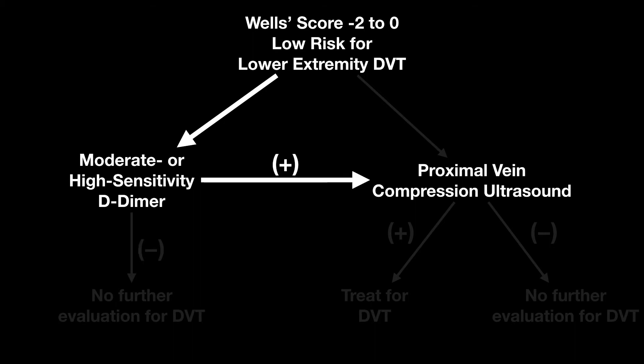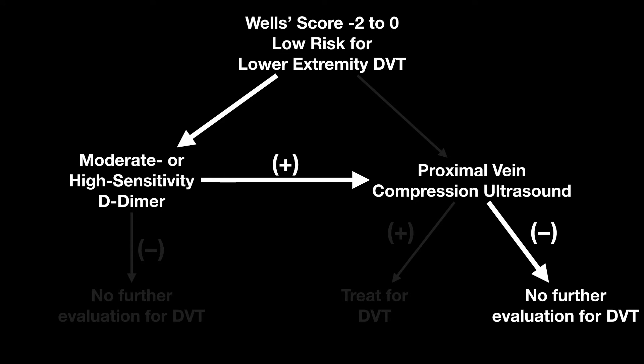So what if it is positive? If it's positive, then we're going to move to a proximal vein compression ultrasound. When we move to that proximal vein compression ultrasound, if it's positive, we're going to treat that DVT — in the venous system proximal to or at the popliteal — with whatever anticoagulation is appropriate. If it's negative, then we're done evaluating this patient for DVT. A positive D-dimer but negative proximal vein compression ultrasound requires no further evaluation per the guidelines.